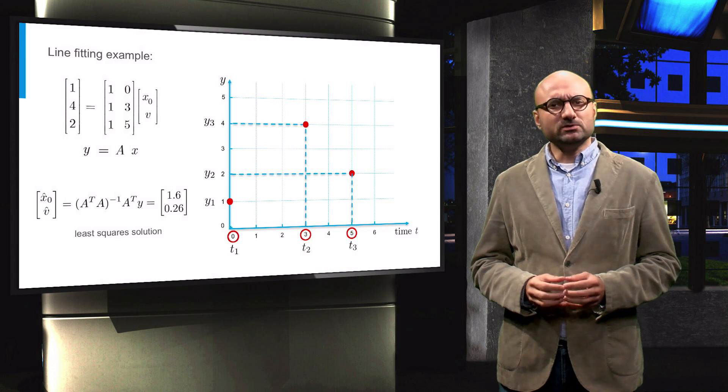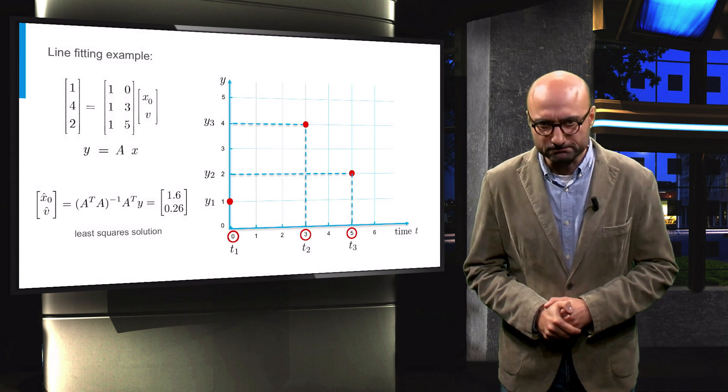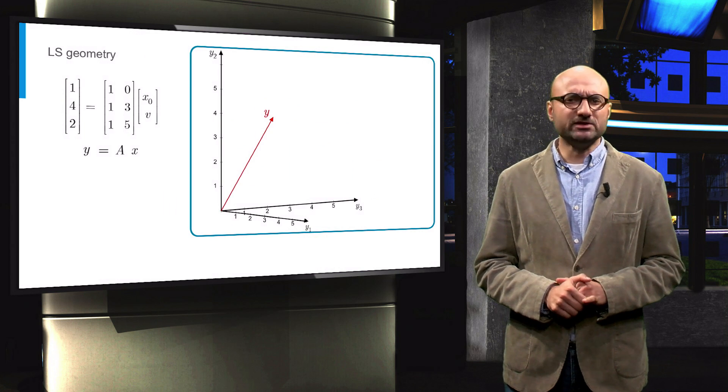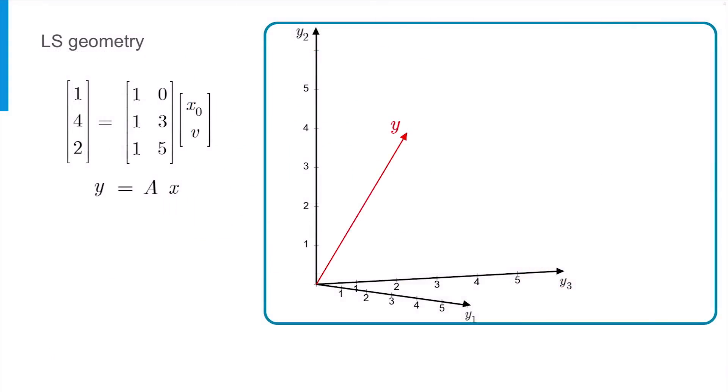Now, let's look at the geometry of this problem. The observation vector is three-dimensional, so I can draw it as the red arrow in the plot on the right. Now, let's think about the range space or column space of matrix A. Recall that the range space is the space that is spanned by all the columns of the matrix A.